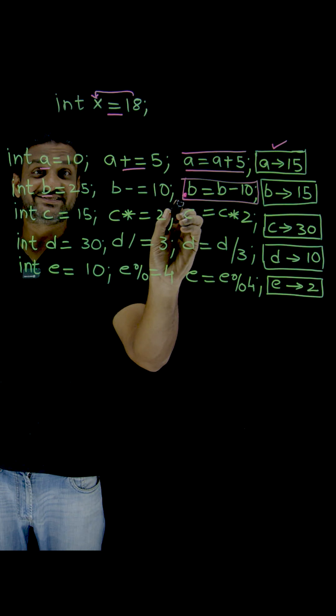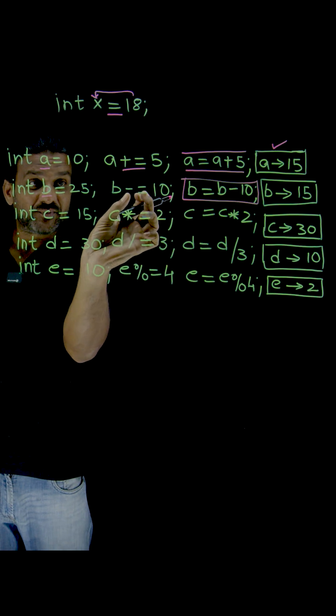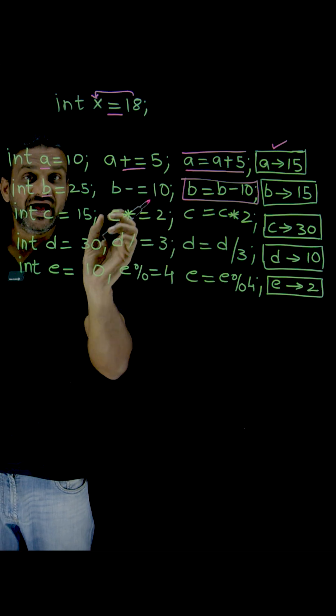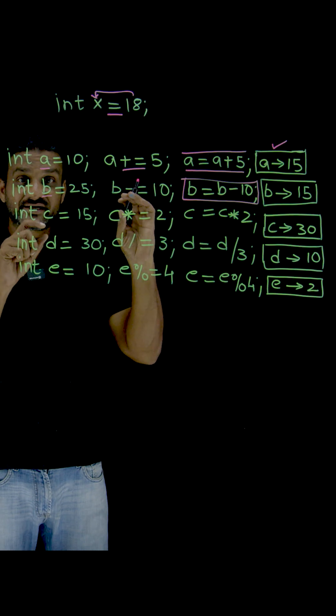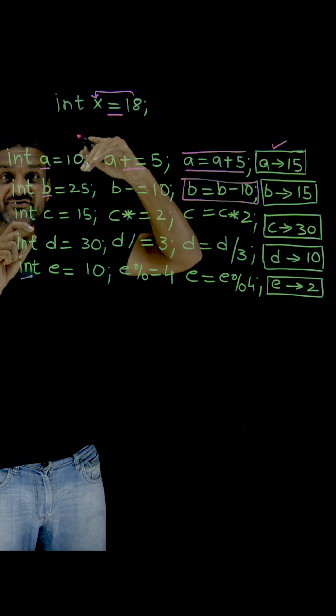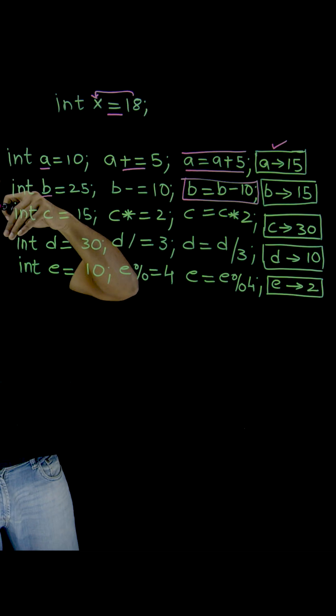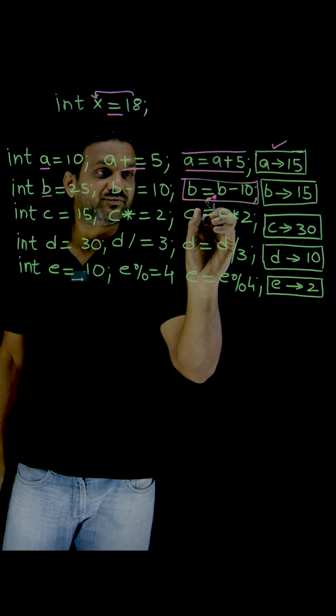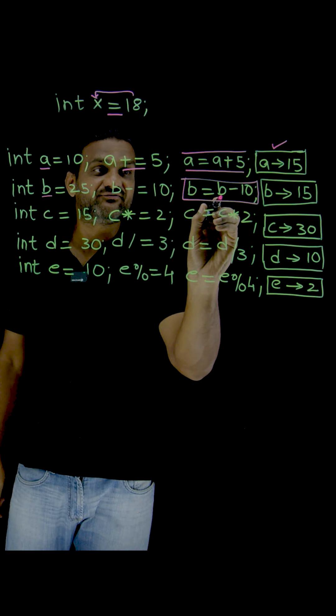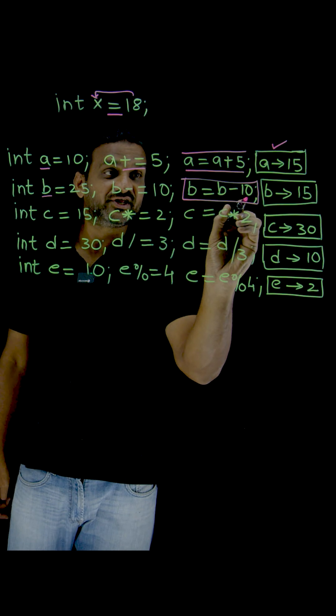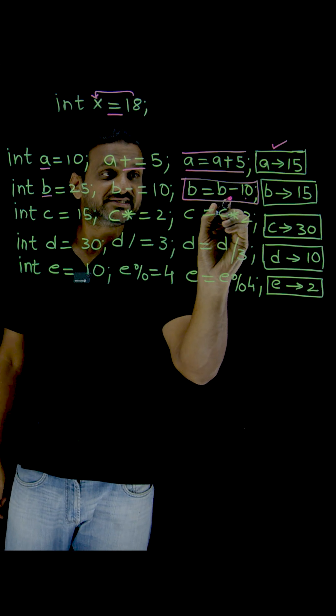What does this operator mean? This operator means subtract 10 from the existing value of b and assign that value to b itself. The existing value of b is 25. 25 minus 10 is going to be 15, and that 15 will be assigned...